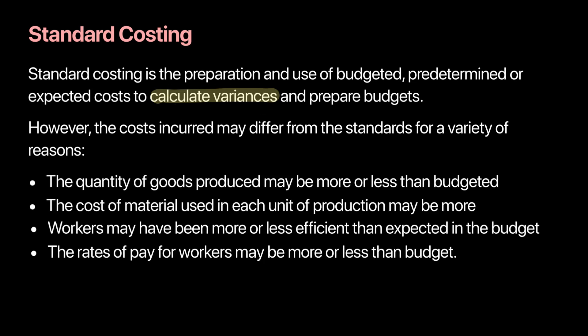Some reasons why budgeted cost can differ from actual cost include the number of units or quantity of goods produced — for example, a firm budgeted to produce 5,000 units but ended up producing 7,000 units. The cost of material can also increase, or more kilograms may be consumed per unit, or a kilogram could become more expensive.